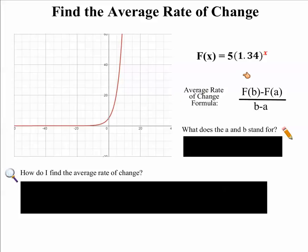So this function of the graph is represented by this algebraically. We have F(x) = 5(1.34)^x. So the formula that you want to use is F(b) - F(a) all over b - a. Well, you're probably asking yourself, what does a and b stand for?